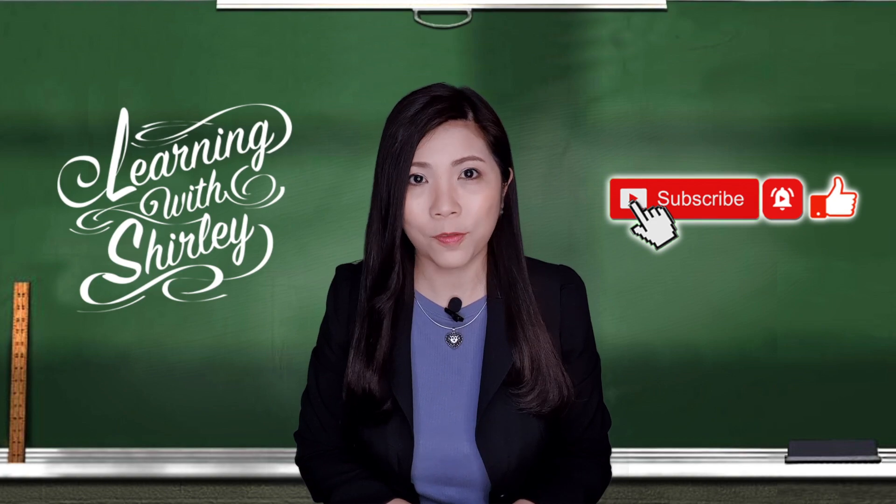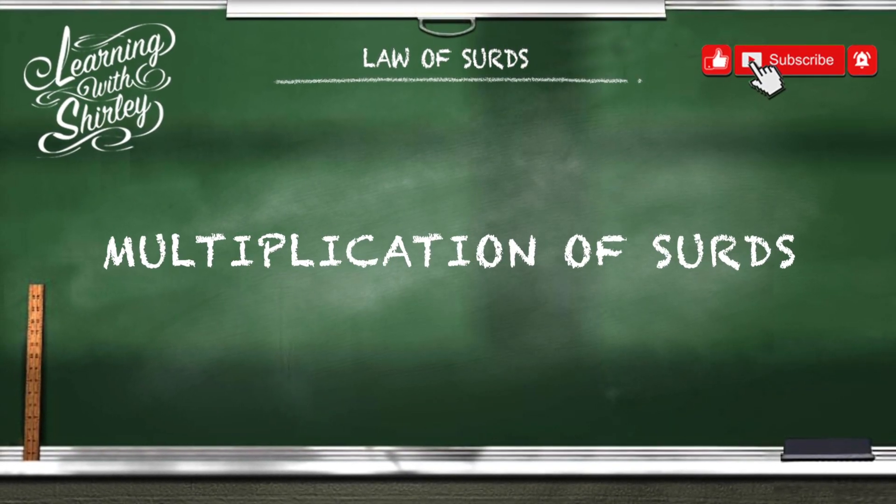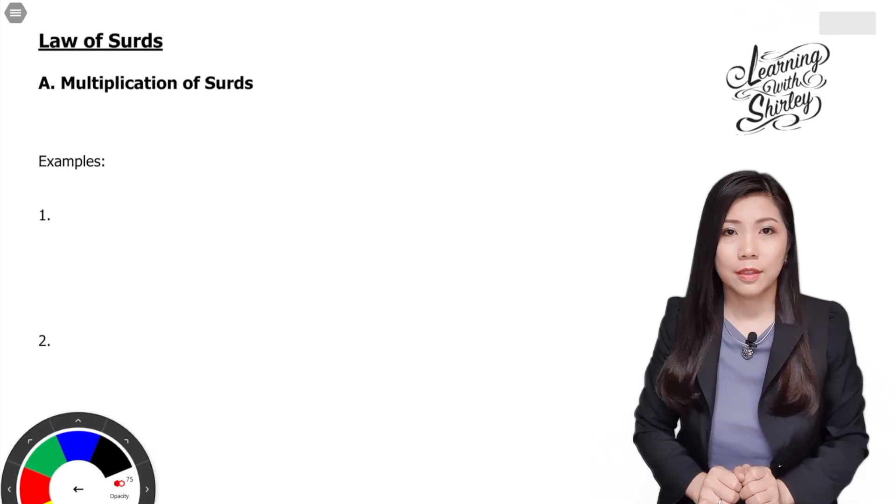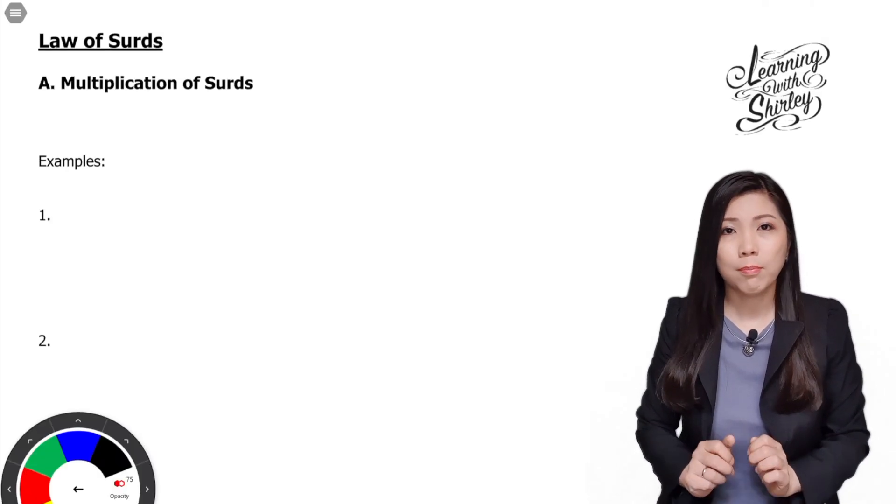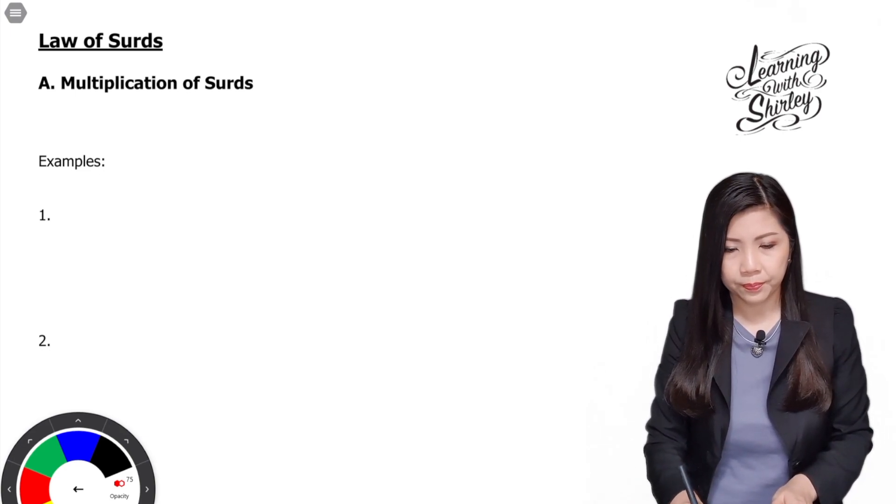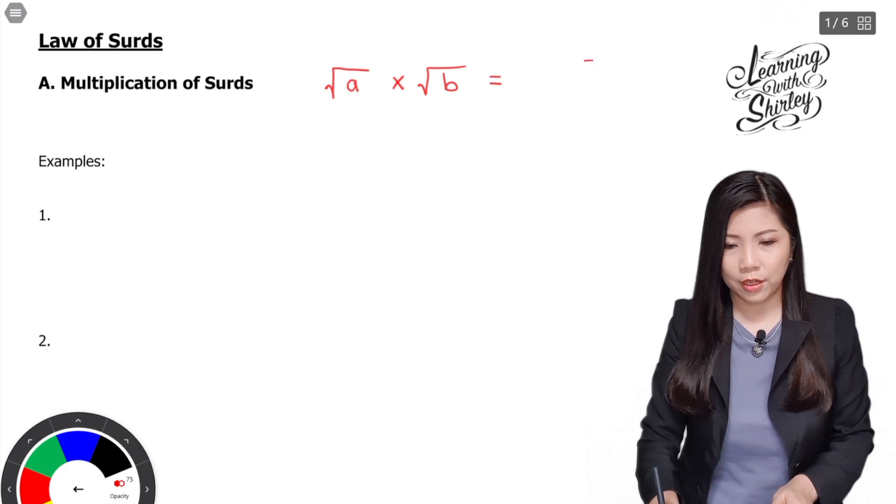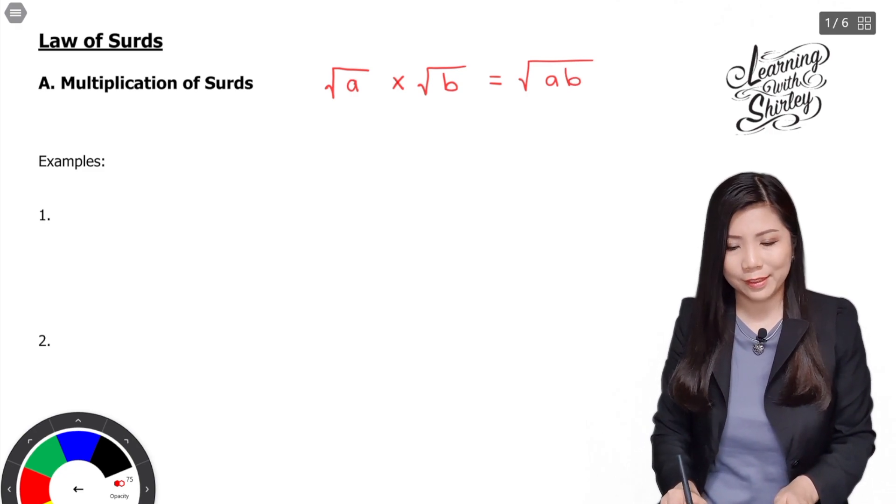Let's take a look at the first part of law of surds. The first part of the chapter is about multiplication of surds. So let's look at this formula: surd A times surd B is equal to surd AB. Let's look at more examples.